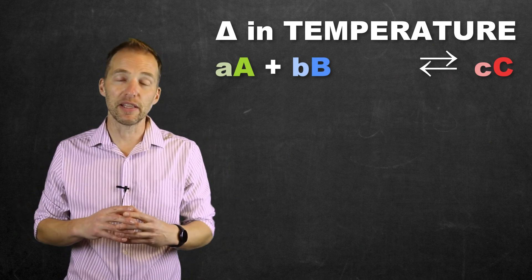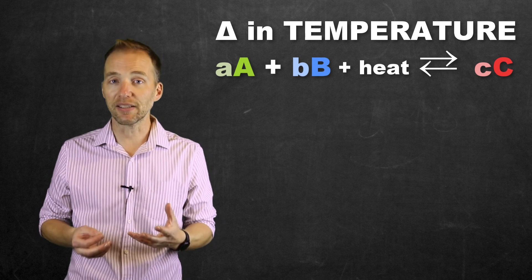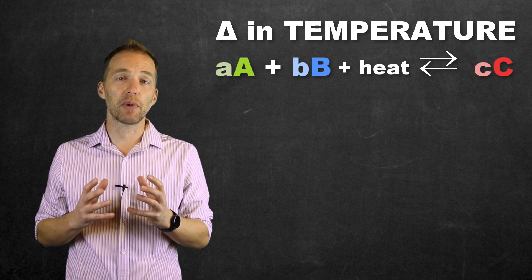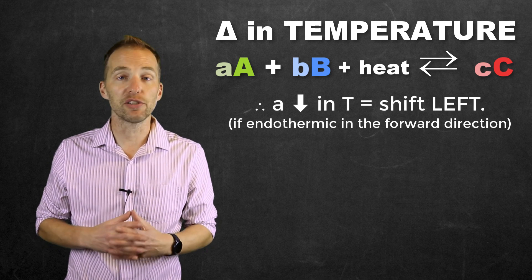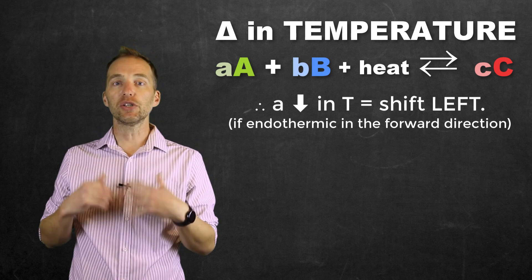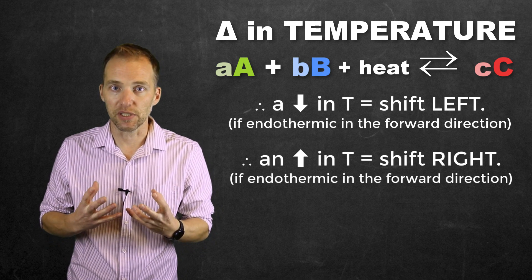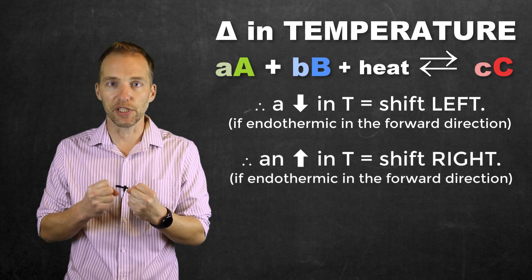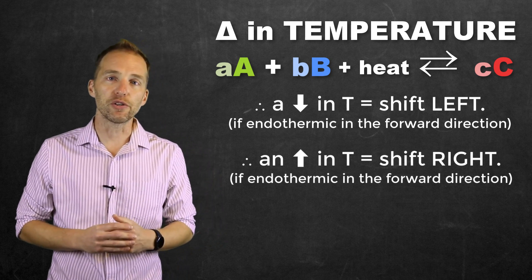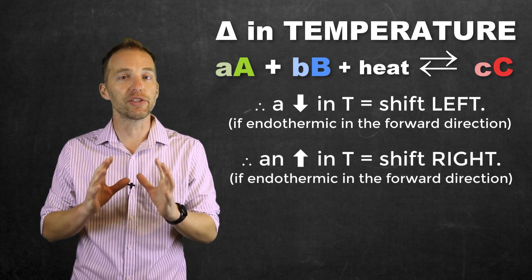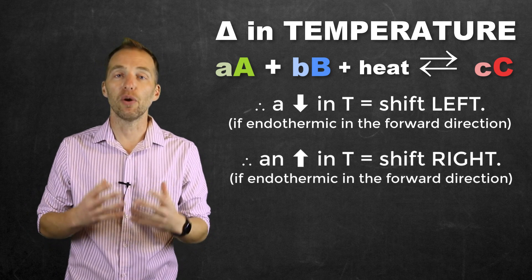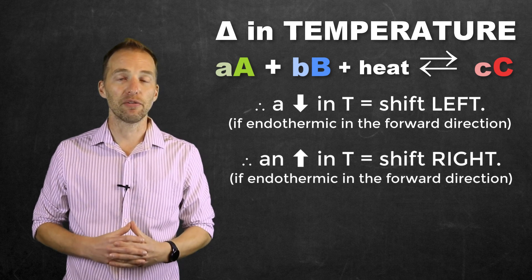It's important to understand when analyzing temperature changes to an equilibrium system whether the reaction is endothermic or exothermic in the forward direction. For an endothermic reaction, energy is on the reactant side. Decreasing energy available causes the system to shift to the reactant side, while increasing energy available causes the system to utilize that excess energy and shift to the right.